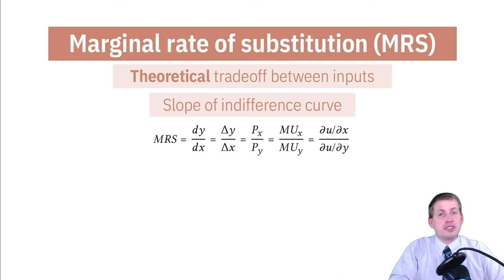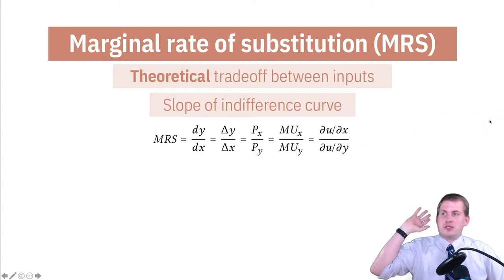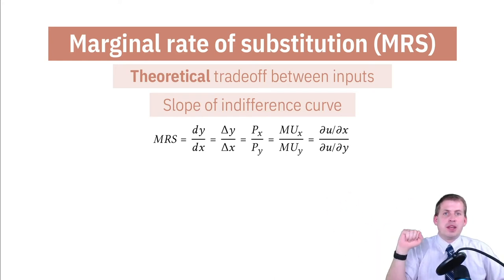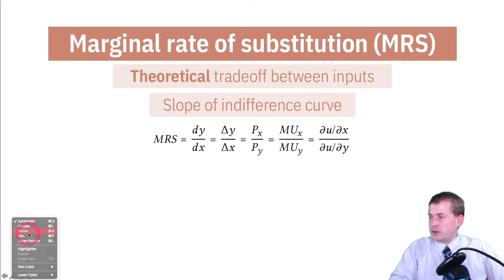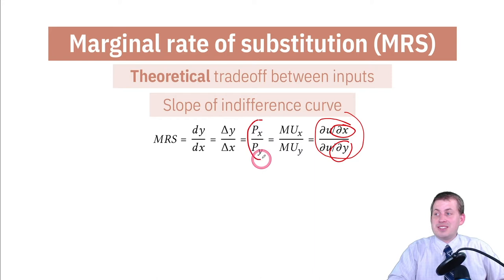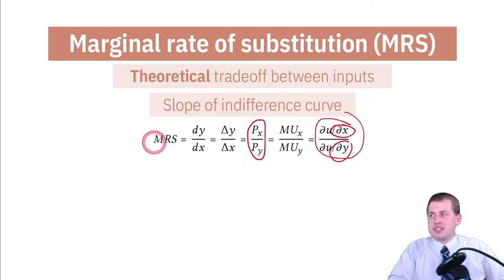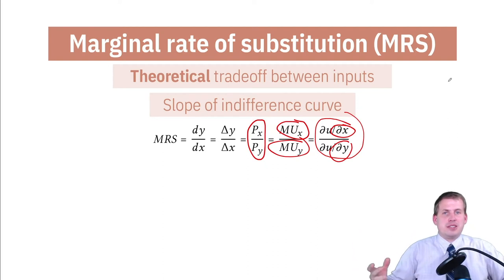There are a bunch of different ways of writing the marginal rate of substitution, and this is on the course website on the resources page. You can figure out the marginal rate of substitution a few different ways: using the partial derivative for the x part divided by the partial derivative for the y part, or if you only know the prices of things, you can use the price ratio. It's also the marginal utility you get from x over the marginal utility you get from y. These are all mathematically the same thing — there are proofs in dense textbooks, but I just trust that they're the same.